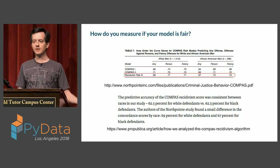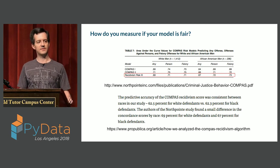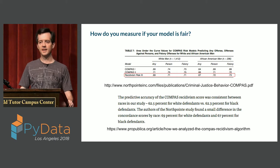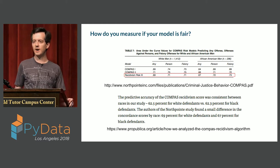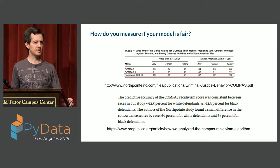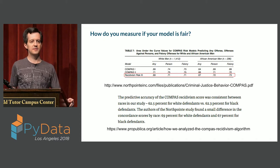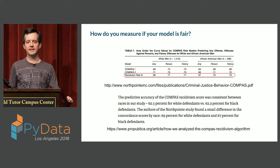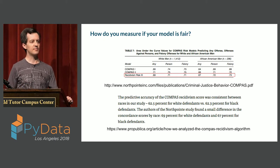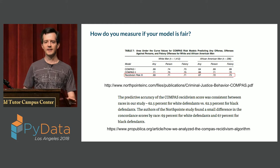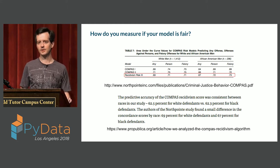The ProPublica article actually acknowledges this as well — they checked the accuracy of the algorithm and found that overall accuracy was the same between races, no difference. And yet ProPublica argues, and I would tend to agree, that the false positive and false negative rates are actually a bit more consequential here. The makers of this algorithm cared about bias, checked for bias, and concluded there wasn't any. And yet someone else coming along later, looking at it in a different way, said this actually is very biased and this is a problem. So there are subtleties in determining whether or not your algorithms are fair.